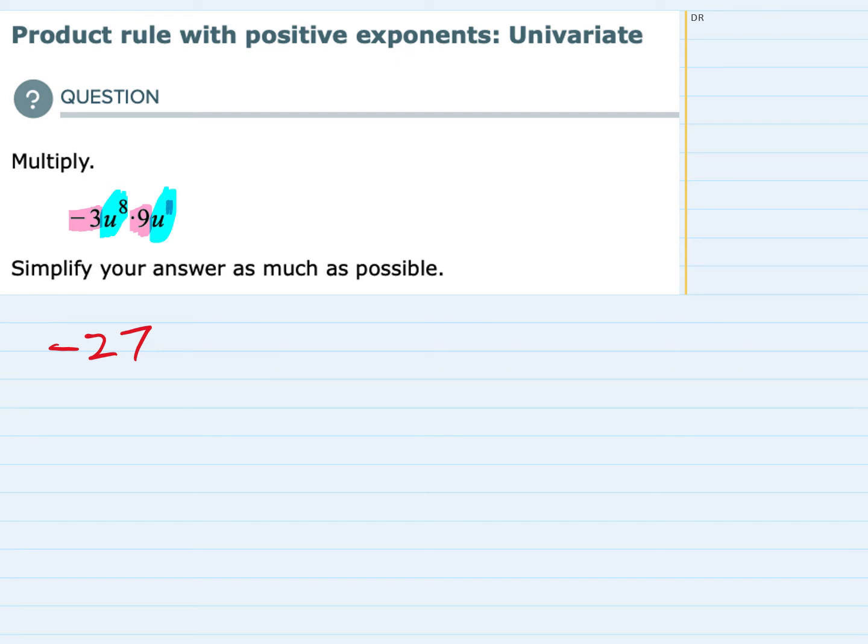So we have u^8 times u^1. And our rule for multiplying variables is that we add the exponents. So u^8 times u^1 is going to give us u to the 9th power. That's our 8 plus 1.